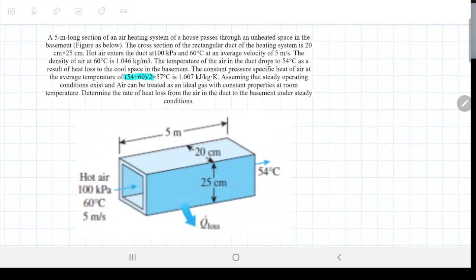That's the first mistake of this engineer, because we have an air system, an air duct going through the rooms and living room. At some point it has to go through the basement, but the basement is colder than the rest of the house. The cross section of the rectangular duct is 20 by 25 centimeters. Hot air enters the duct at 100 kilopascals and 60 degrees Celsius at an average velocity of 5 meters per second. The density of air at 60 is 1.046, and the temperature of the air after it passes through the heat loss in the basement is 54 Celsius.